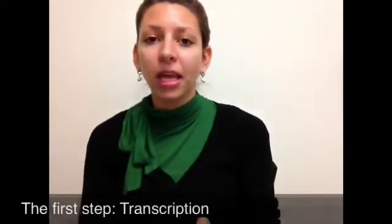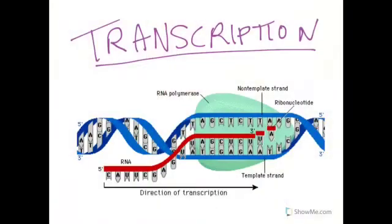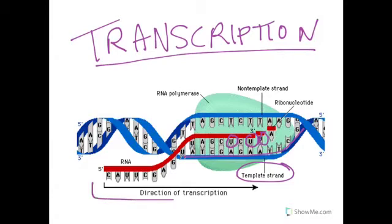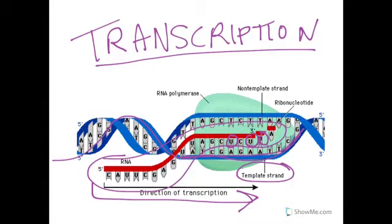The first step of protein synthesis is transcription — the process of making, or transcribing, mRNA from the DNA in the nucleus. It's just like DNA replication, except only one side is copied — the coding strand, or template strand. And instead of T's matching up as they would on a DNA molecule, it's going to be U, because mRNA doesn't use T, it uses U — uracil. The direction of transcription is the same, from 5' to 3'. When the entire template strand is copied, the mRNA strand will travel outside the nucleus to get ready for translation.